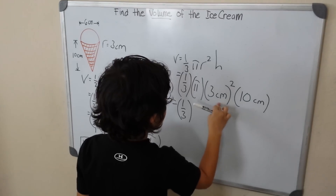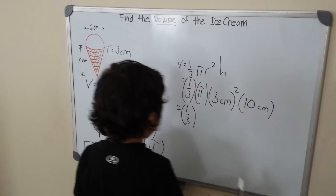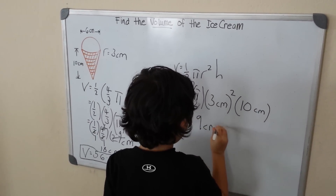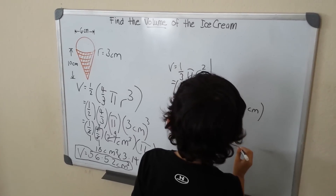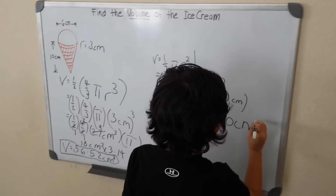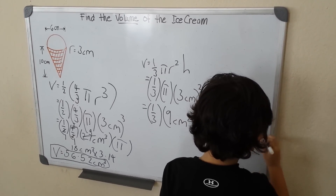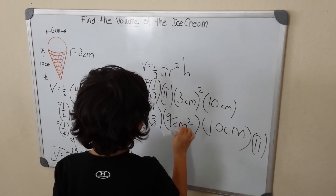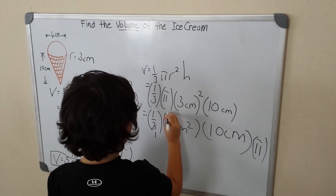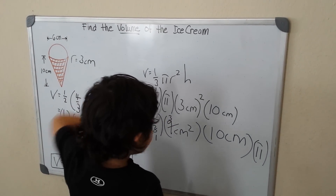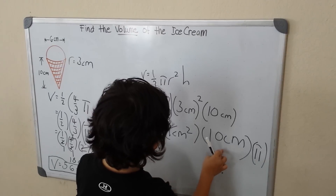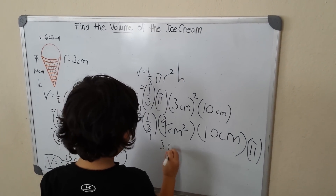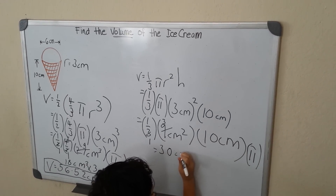Let's put pi at the end and simplify the exponents. 3 times 3 is 9, so 9 centimeters squared. Now we cross-cancel 3 and 9 — since 9 is divisible by 3, we change 3 to 1 and 9 to 3. So 1 times 3 is 3, times 10 is 30. That equals 30 centimeters cubed.